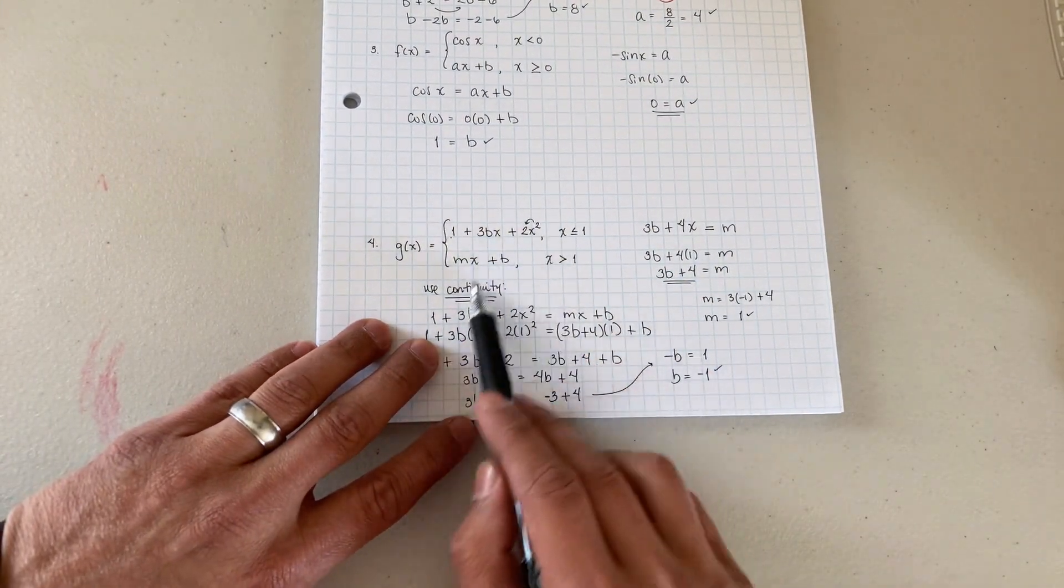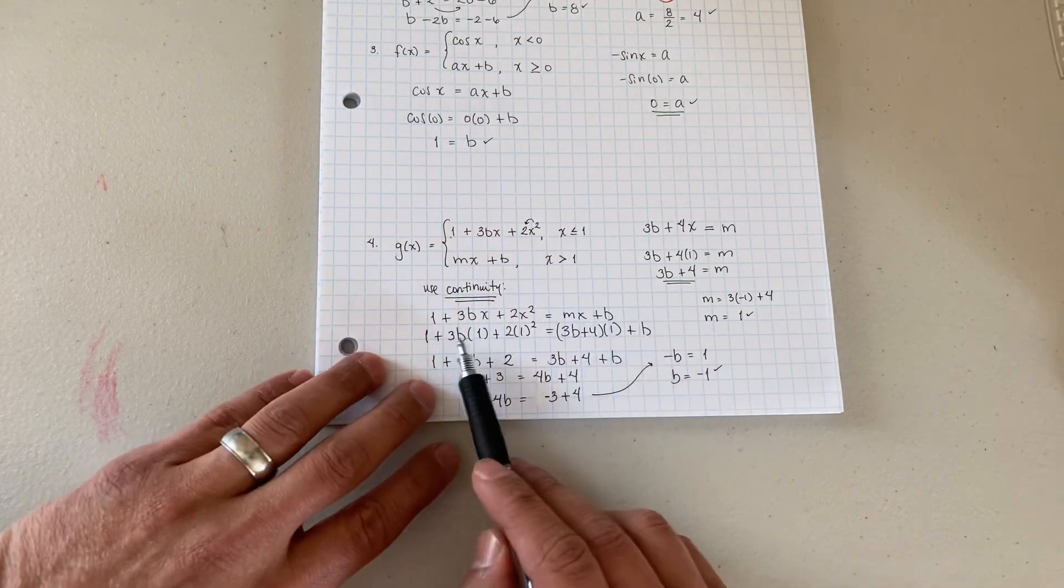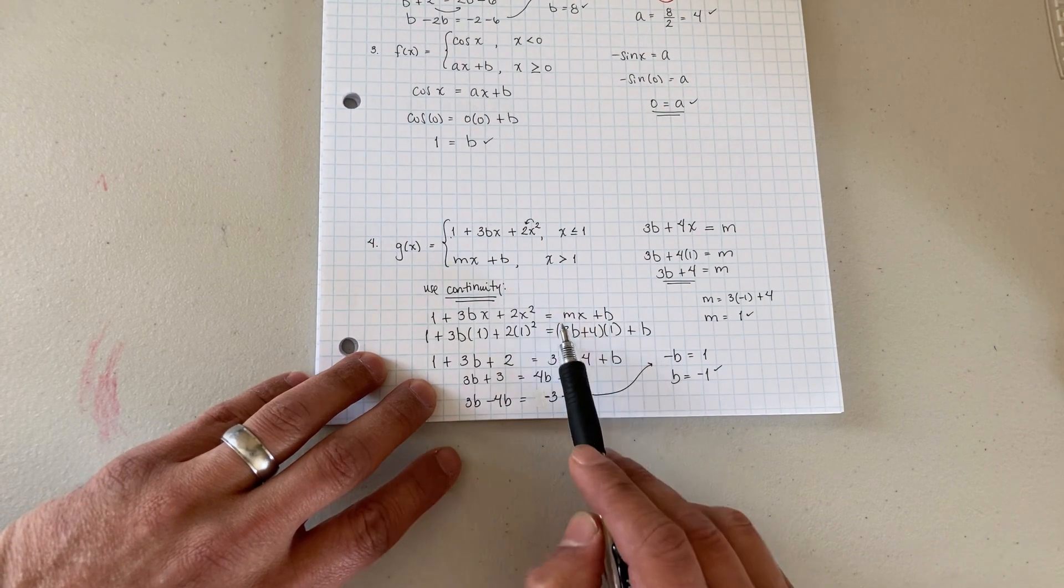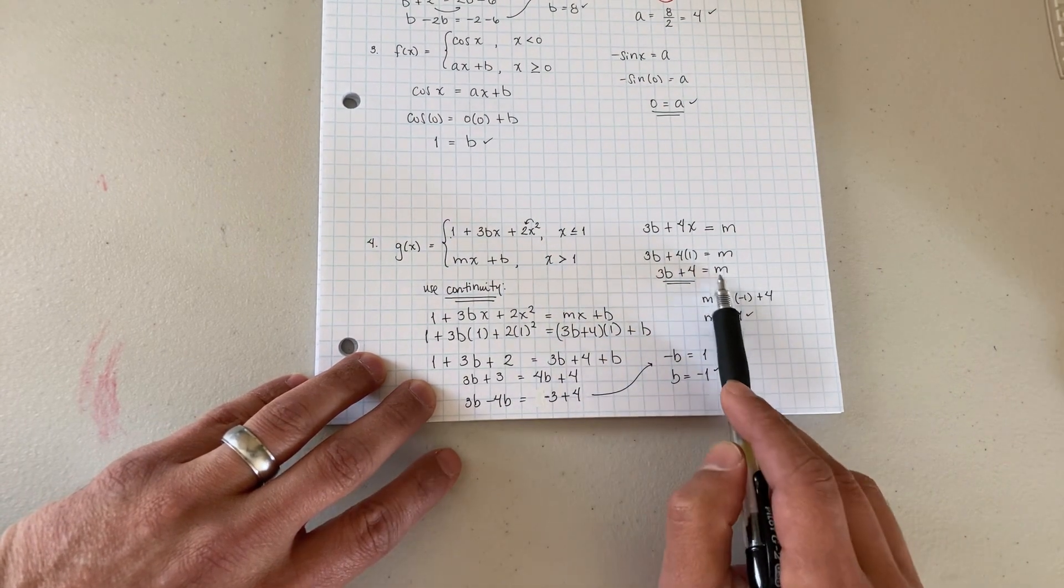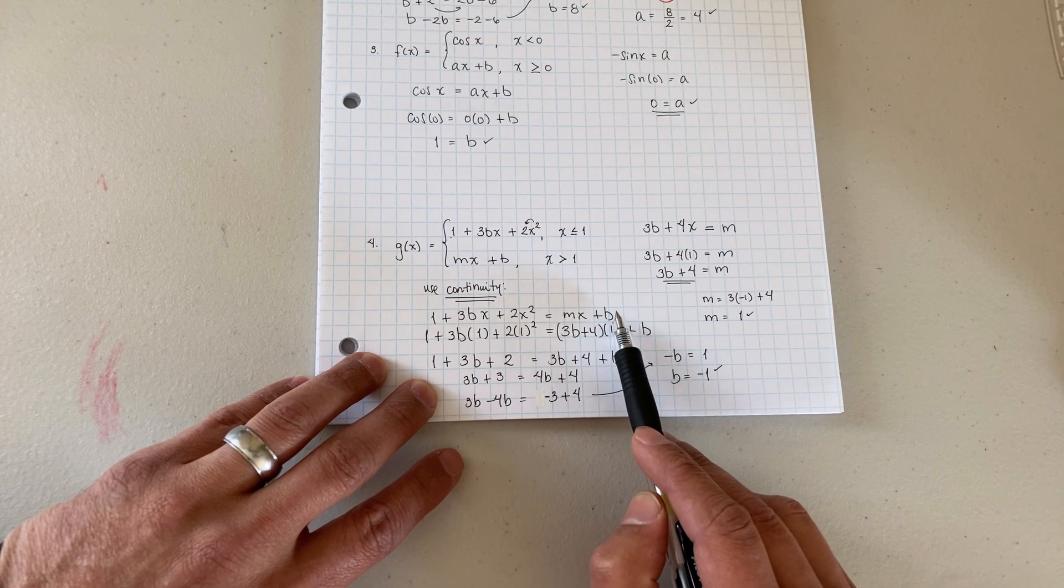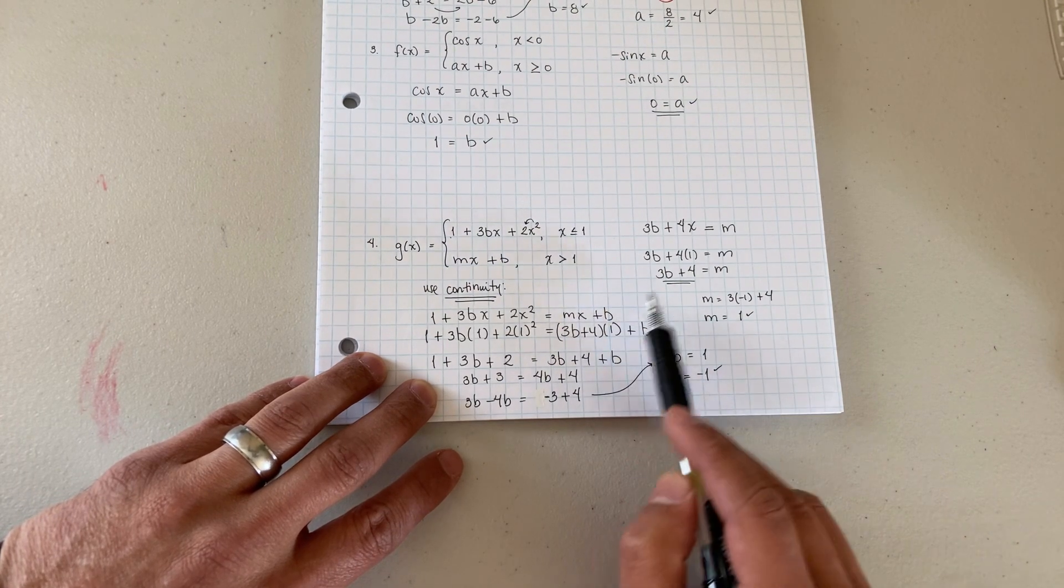Limit from the left equals the limit from the right, plug in that 1. But now we have a value for m, don't we? We can use 3b plus 4. So now we have everything in terms of b. Plug it in here, distribute and our x is 1.